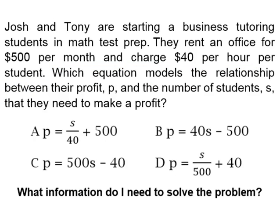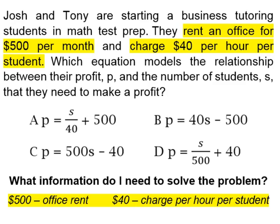What information do we need to solve the problem? One of the things we need is to know how much rent Josh and Tony pay per month, and that's $500. Also, they charge $40 per hour per student for tutoring.